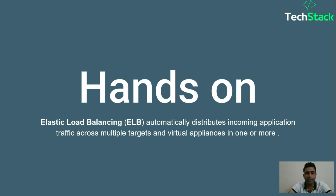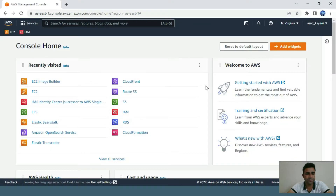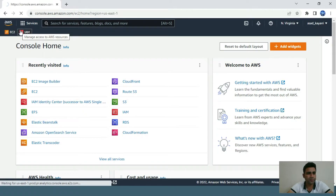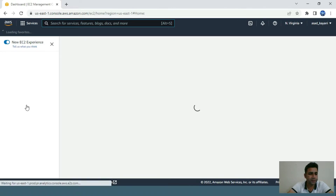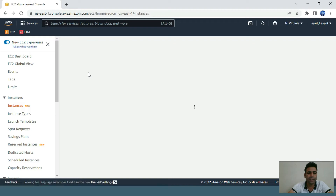Let's have a hands-on demonstration of how Elastic Load Balancing automatically distributes incoming traffic across multiple targets and virtual machines in one or more groups. First, we'll go to EC2 instances, create two instances, and then create an ELB on them.